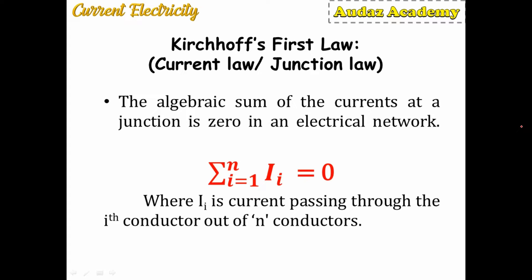Suppose there are five conductors — the current passing through each will be i1, i2, i3, i4, and i5. The sum of all these currents across a junction point will always be equal to zero.